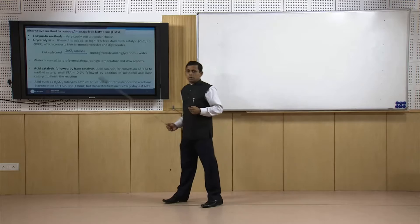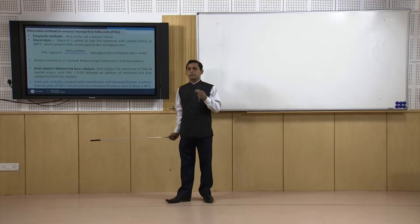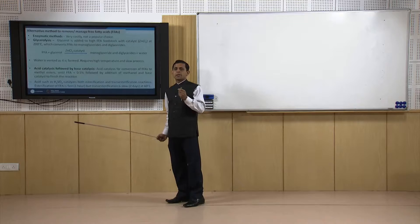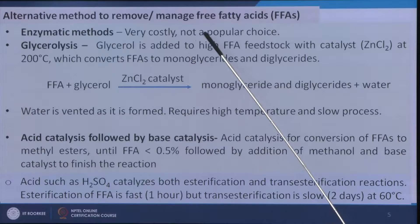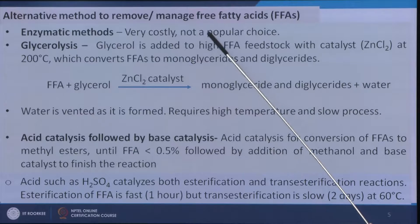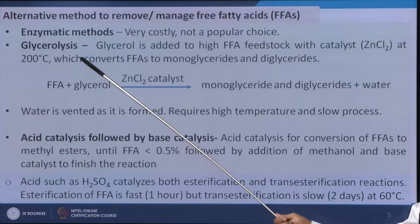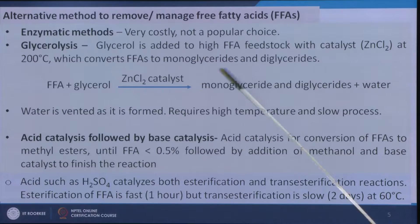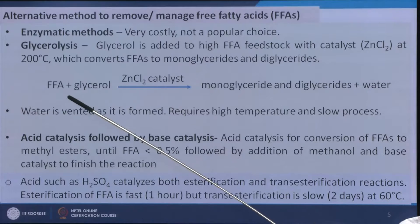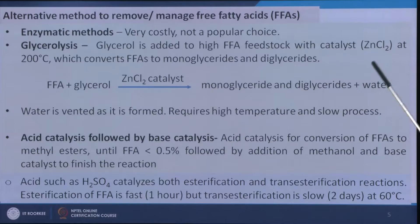The main role of acid esterification is to remove or convert the free fatty acids. There are some other approaches that do the same job. One is the enzymatic method — some enzymes can do a similar job, but the difficulty is that it is very costly and not a popular option. Another is glycerolysis, where glycerol is added at 200°C in the presence of a catalyst like zinc chloride. The free fatty acids are converted to monoglyceride and diglyceride, and water is formed. At 200°C the water produced in the reactor is driven off. Acid catalysis followed by base catalysis is another option.